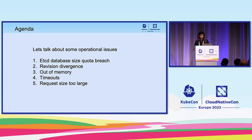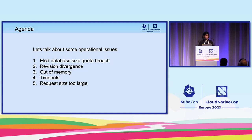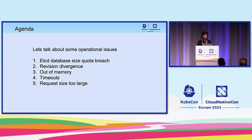Now that you know who we are, let's get to the agenda. Today we want to talk about five operational issues we see while operating etcd. The first is where storage quota is not enough for the workload. The second is revision divergence, where nodes don't agree with each other. Third, etcd can run out of memory. Fourth, we sometimes see timeouts mostly related to maintenance workflows. And fifth, requests that are too large for the limit etcd runs with.